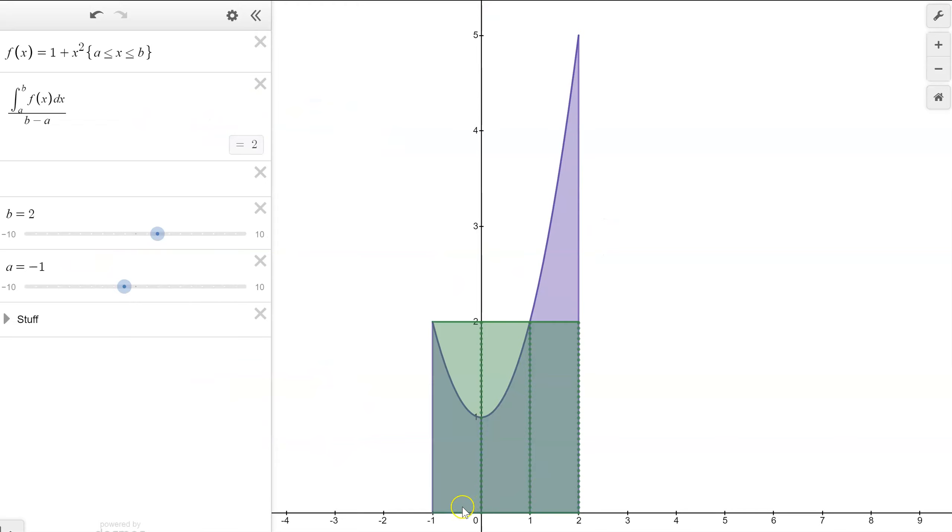Here's a little better picture. We added up those areas, divided it by 3. It gave us 2. We draw a rectangle at 2. Look where they cross at, right there and there.